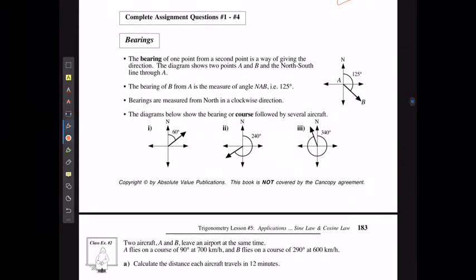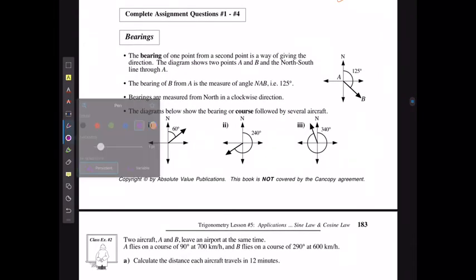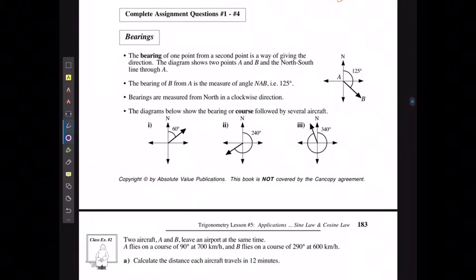Let's take a look at bearings. The bearing of one point from a second point is a way of giving the direction. The diagram shows two points, A and B.